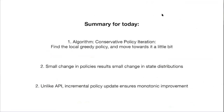Summary of today's lecture: Conservative Policy Iteration finds a locally greedy policy using the greedy policy selector, then moves towards it by a tuned step size alpha — conservative in name and in design. The key lemma is that small change in policy leads to small change in state distribution, with a 1/(1-gamma) amplification. Unlike approximate policy iteration, CPI guarantees monotonic improvement at every iteration before termination.